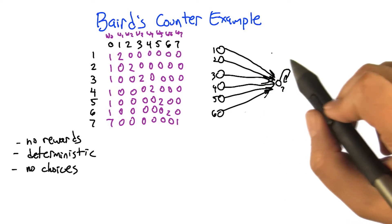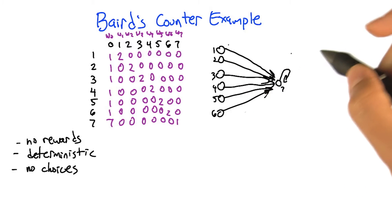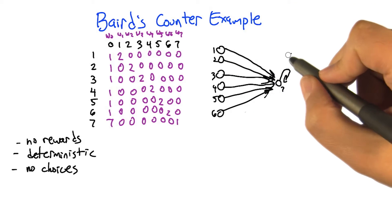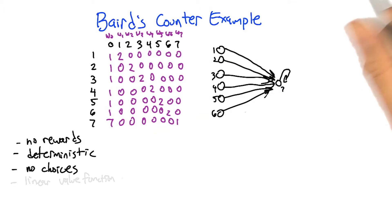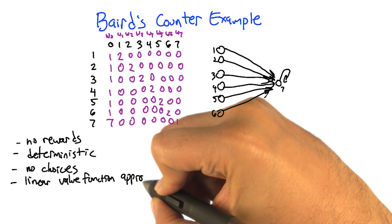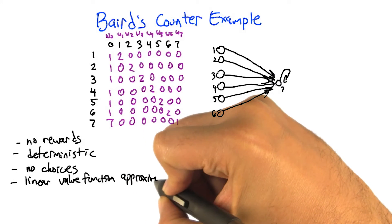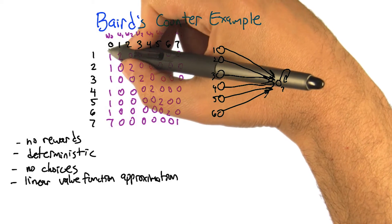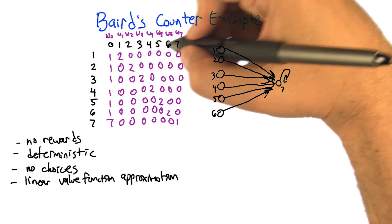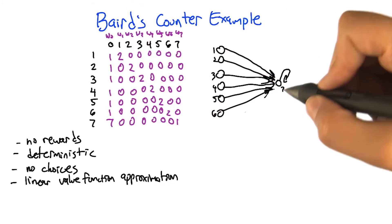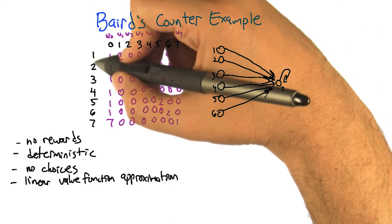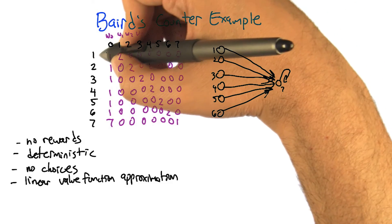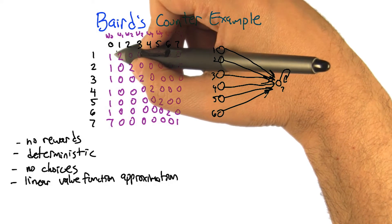This is super-duper simple. And if we had to learn this using Q-learning or something like that, presumably this would actually learn quite quickly. What we're going to do, though, to make life difficult, is do this in a function approximation setting — linear function approximation — with the following set of features. There are seven states in the picture, and associated with each state is a feature vector. There are eight features that are part of that.